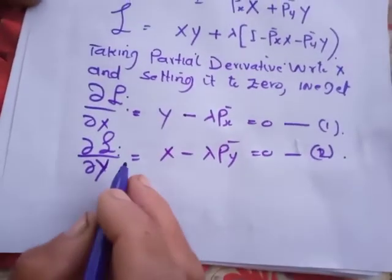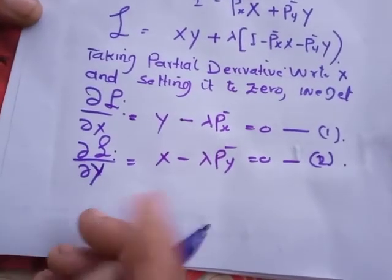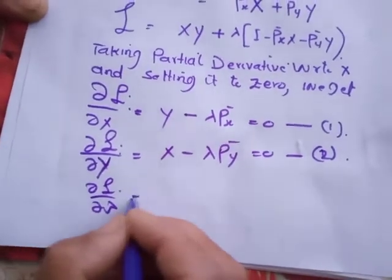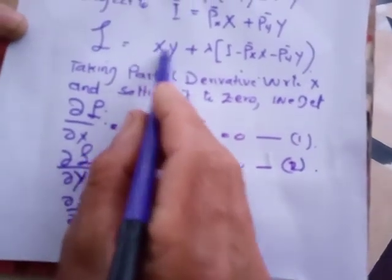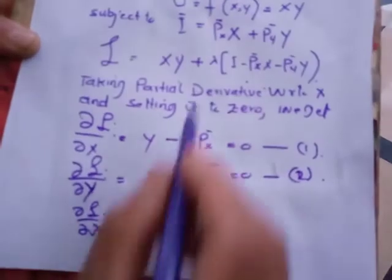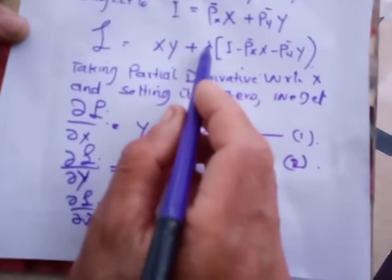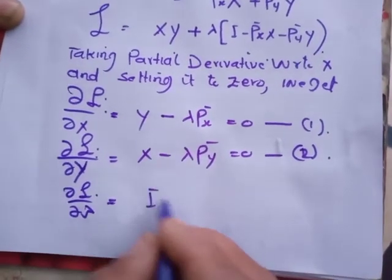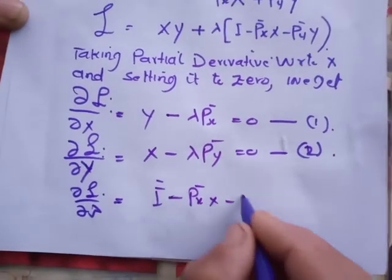And then, as we have three choice variables x, y, and lambda, differentiating with respect to lambda we get: derivative of this term is equal to 0. And as we are deriving with respect to lambda, the derivative of this lambda is equal to 1. So we have then I minus Px times x minus Py times y equal to 0, which is equation number 3.